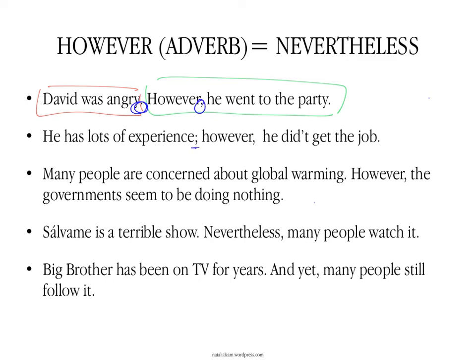You can also use 'however' after a semicolon, which is a kind of strong pause. For example: he has lots of experience; however, he didn't get the job. Or: many people are concerned about global warming; however, governments seem to be doing nothing. You have a synonym of 'however,' which is 'nevertheless,' and you use it in exactly the same way — it's 100% a synonym. However is more frequent; nevertheless is a bit more cultured. For example: Selvame is a terrible show. Nevertheless, many people watch it.